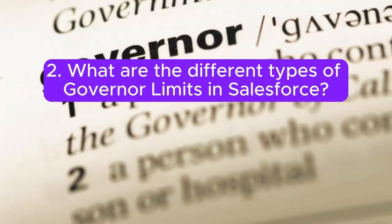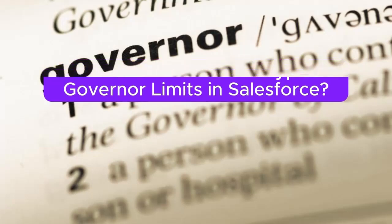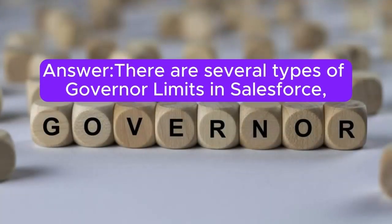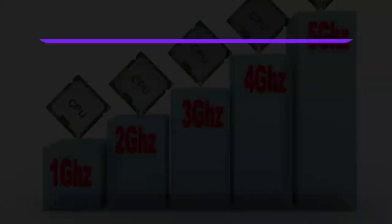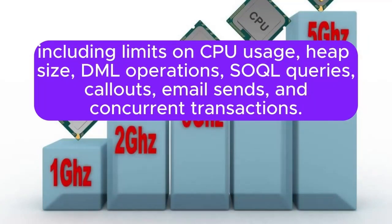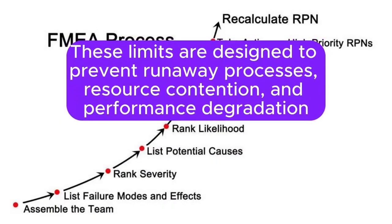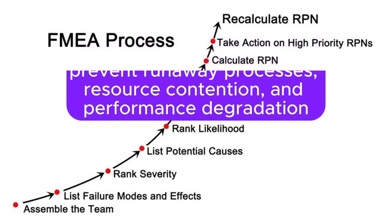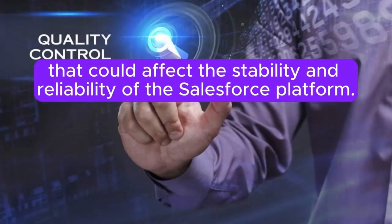Question 2: What are the different types of governor limits in Salesforce? Answer: There are several types of governor limits in Salesforce, including limits on CPU usage, heap size, DML operations, SOQL queries, callouts, email sends, and concurrent transactions. These limits are designed to prevent runaway processes, resource contention, and performance degradation that could affect the stability and reliability of the Salesforce platform.